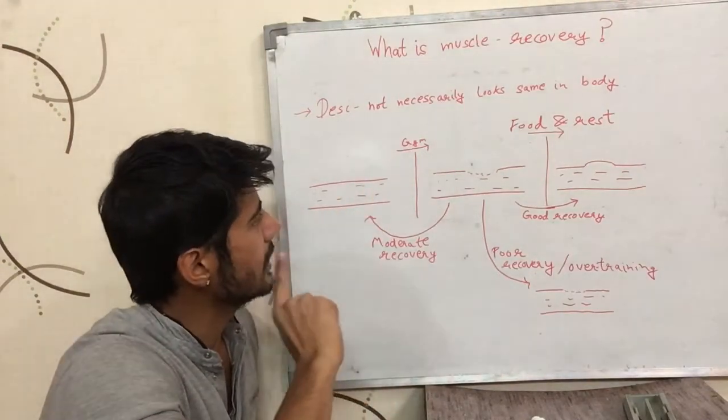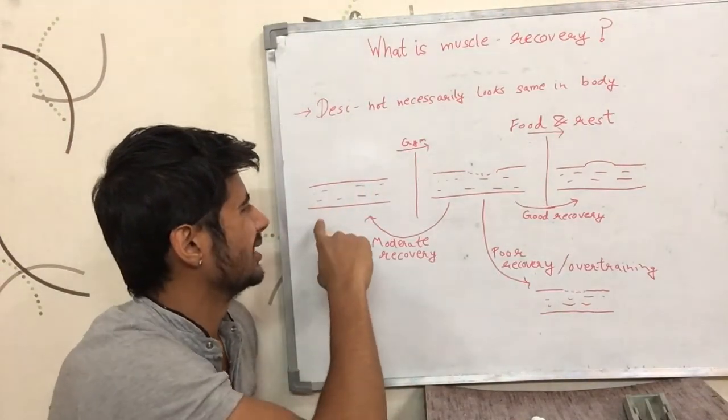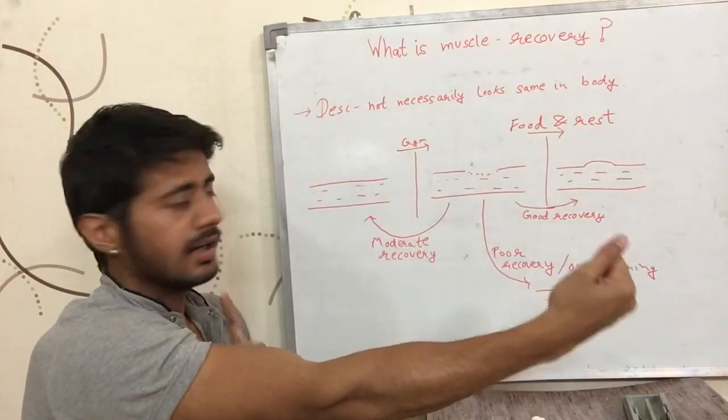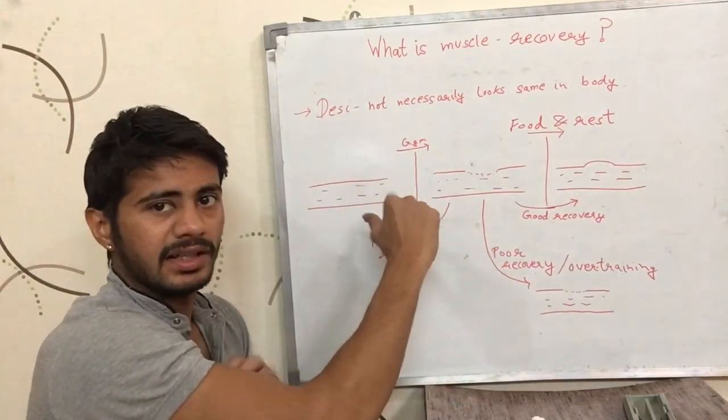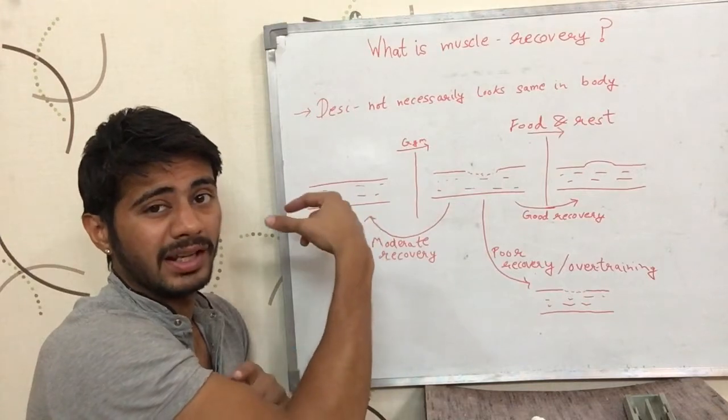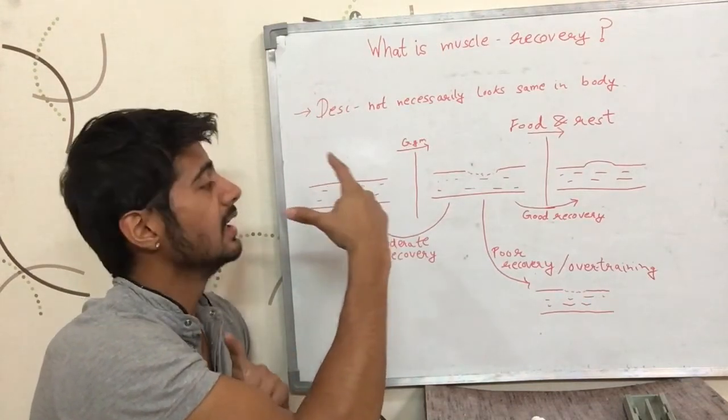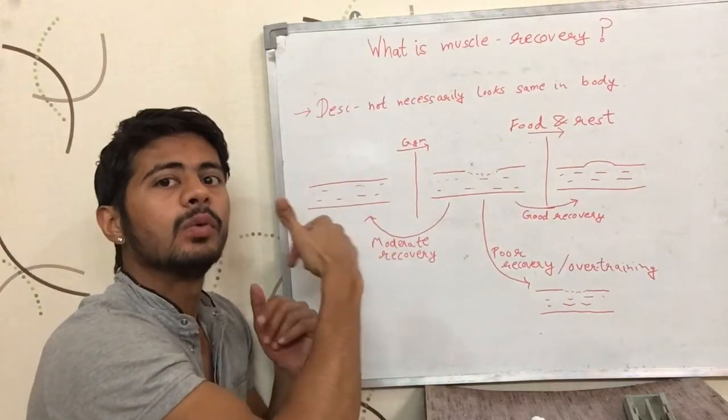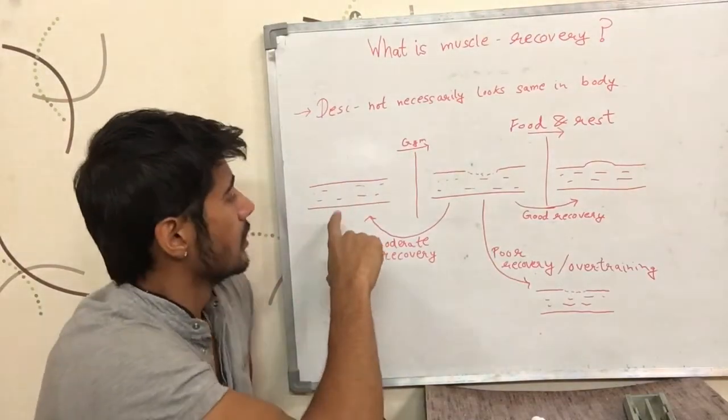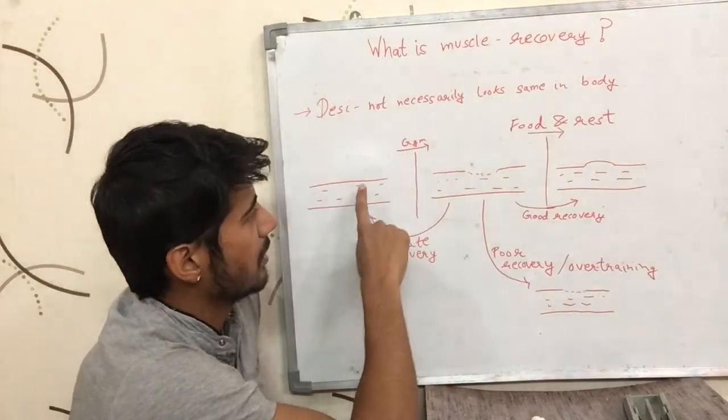Okay, so let's say this is my bicep muscle and it looks like this. It might not necessarily look anywhere close to this in the body but we are trying to understand. So this is how my bicep muscle looks.